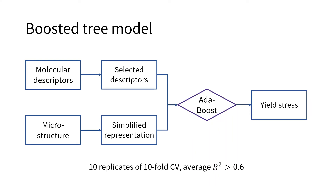After the preprocessing is done, we combine the molecular and microstructure descriptors and train a predictive machine learning model. Since the predictors include both qualitative and quantitative variables, an ensemble model based on trees will be suitable. Here we use the AdaBoost model, repeating 10-fold cross-validation for many times and attain a CV R-squared of over 0.6, which is already very high in a materials science context.